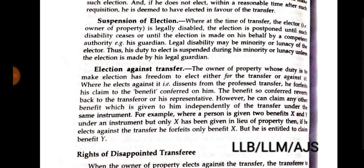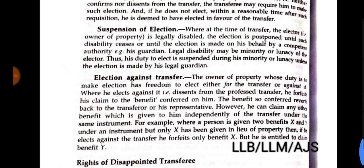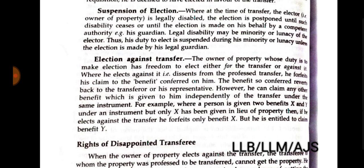Suspension of election. At the time of the transfer, if the elector — that is, the owner of the property — is legally disabled, the election is postponed until such disability ceases, or until the election is made on his behalf by a competent authority such as his guardian. The legal disability may be minority or lunacy. His duty to elect is suspended during his minority or lunacy, unless the election is made by his legal guardian. The legal guardian is an exception.